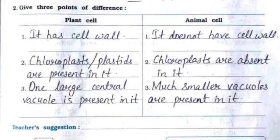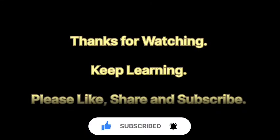Plant cell has a cell wall; animal cell does not have a cell wall. Chloroplasts or plastids are present in plant cells; chloroplasts are absent in animal cells. One large central vacuole is present in plant cells; much smaller vacuoles are present in animal cells.